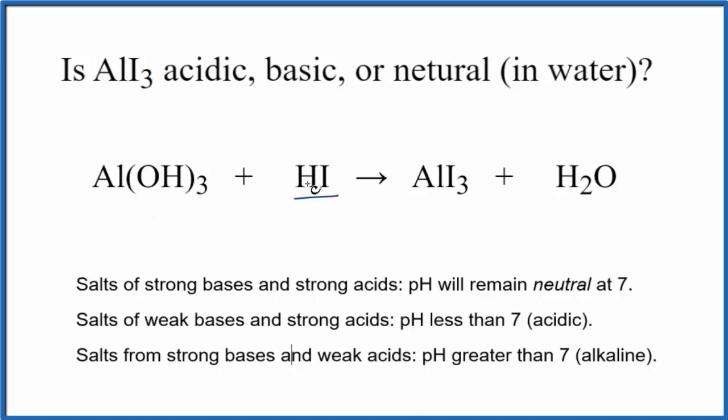and then an acid. We have this H here in front of the I, this is hydroiodic acid. These combine, they produce AlI₃ and water. It's a neutralization reaction.